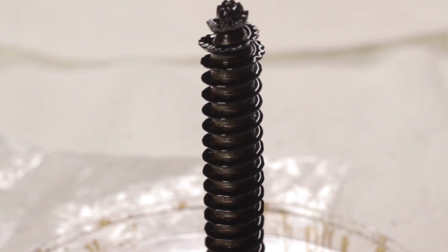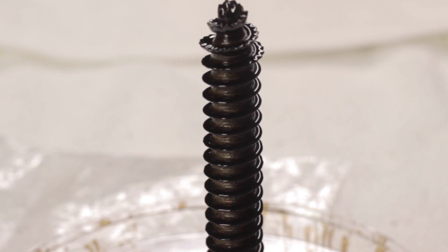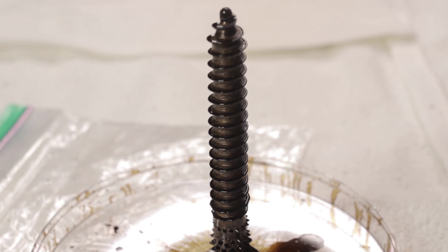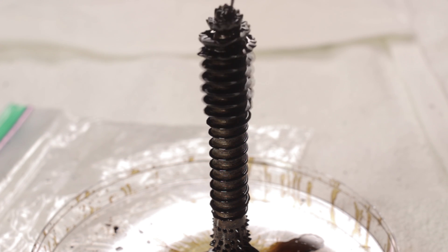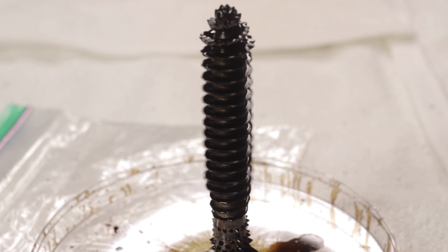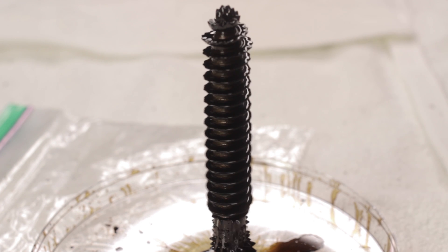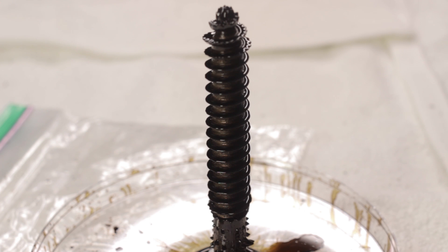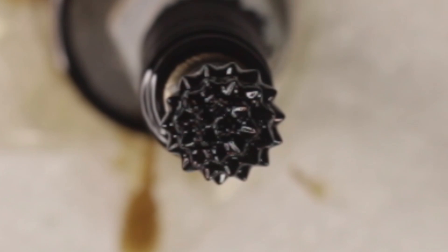Ferrofluid is made of nanoscale ferromagnetic particles, be it hematite, magnetite, or some compound with iron in it that is suspended in a carrier fluid, usually an organic solvent or water.